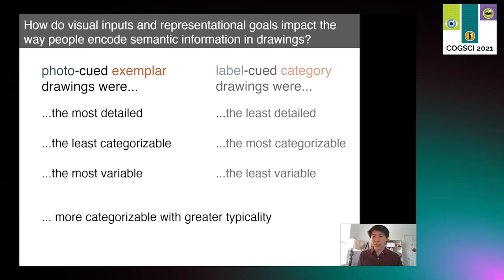Finally, we directly tested the notion that category diagnostic features underlie classifiability by exploring how the prototypicality of stimuli in the photo-cue affected the classifiability of exemplar drawings. And we found that yes, the more typical the stimulus, the easier the drawing is to classify.